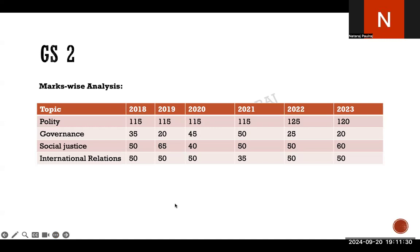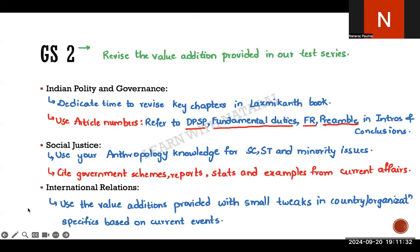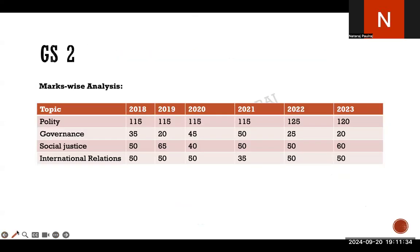If you do a weightage breakdown of GS2, you'll notice that a good chunk of the paper is basically polity. Polity carries approximately 120–125 marks, which is half of your 250 marks. A lot of people think polity is mostly current affairs, but actually a lot of core polity content needs to go into your answers.